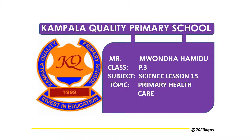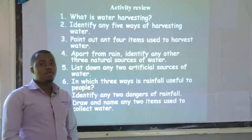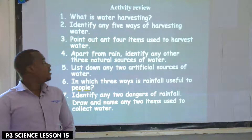In our previous lesson we talked about water harvesting. I'm going through this activity order very quickly. Number one was: what is water harvesting? Water harvesting is the way of collecting water from water sources. Number two: identify any five ways of harvesting water.